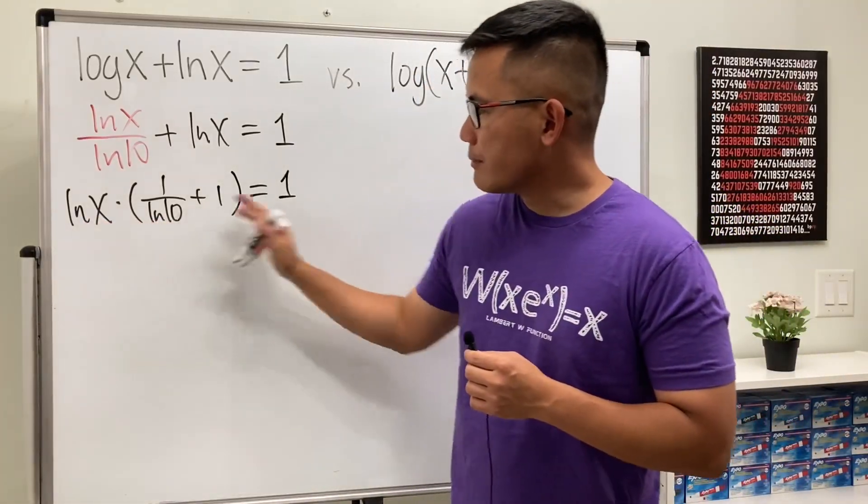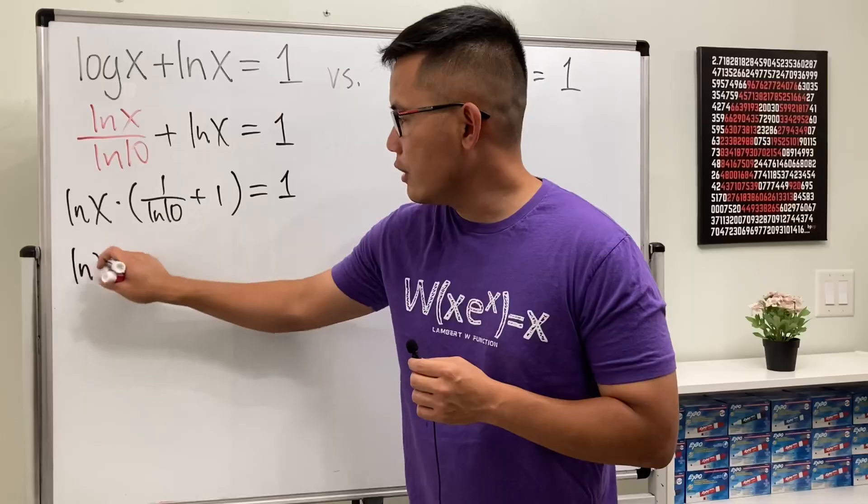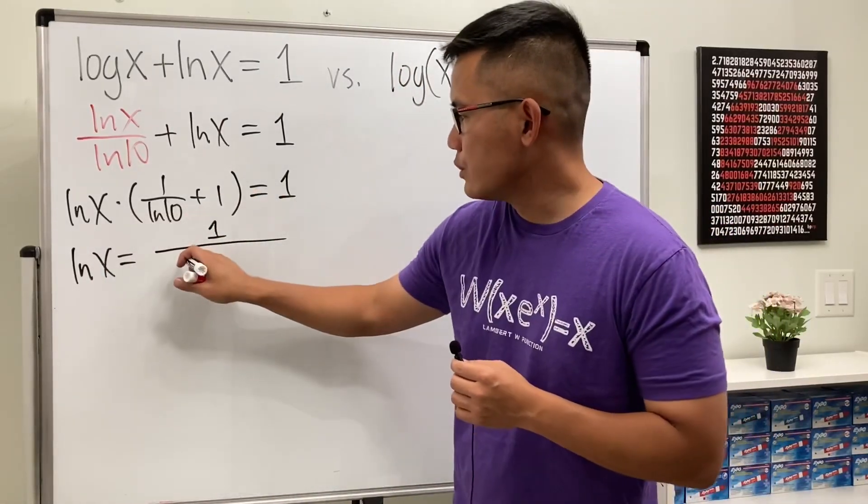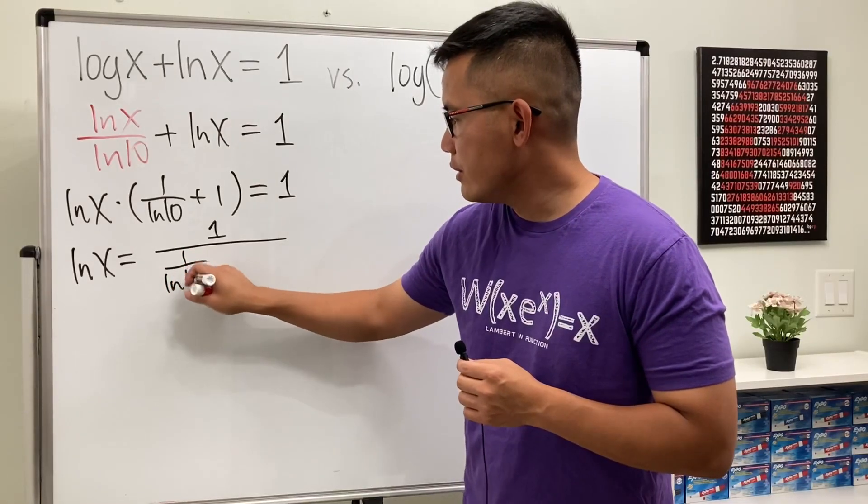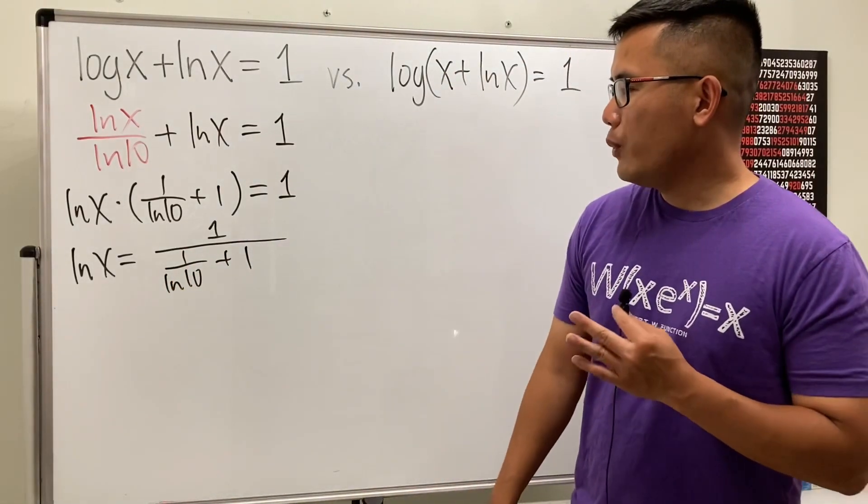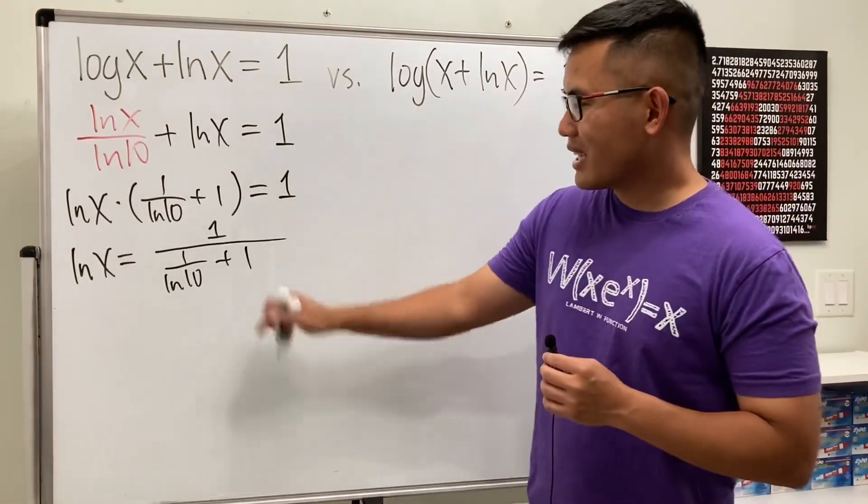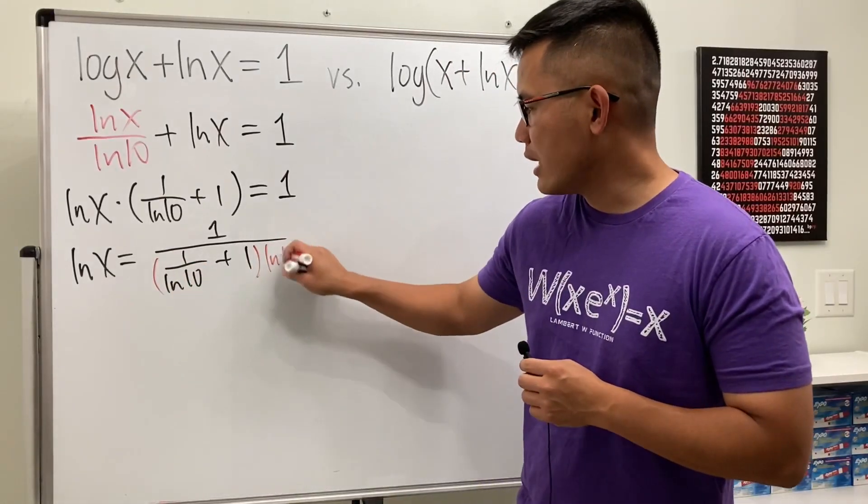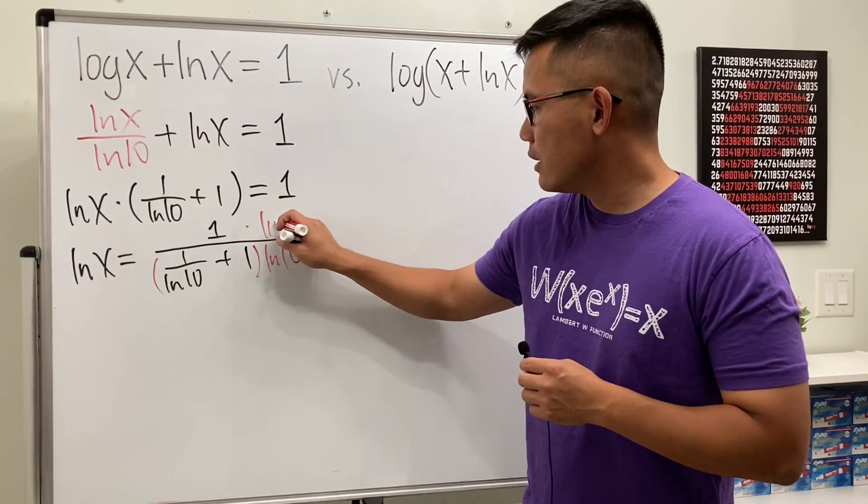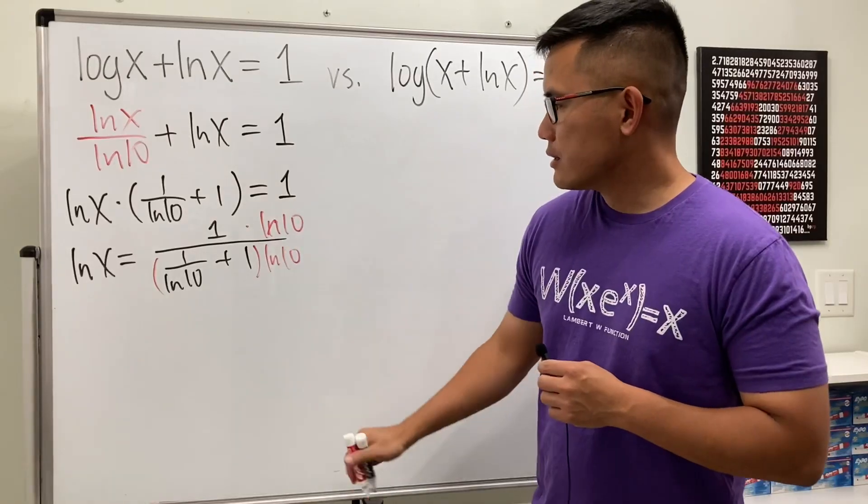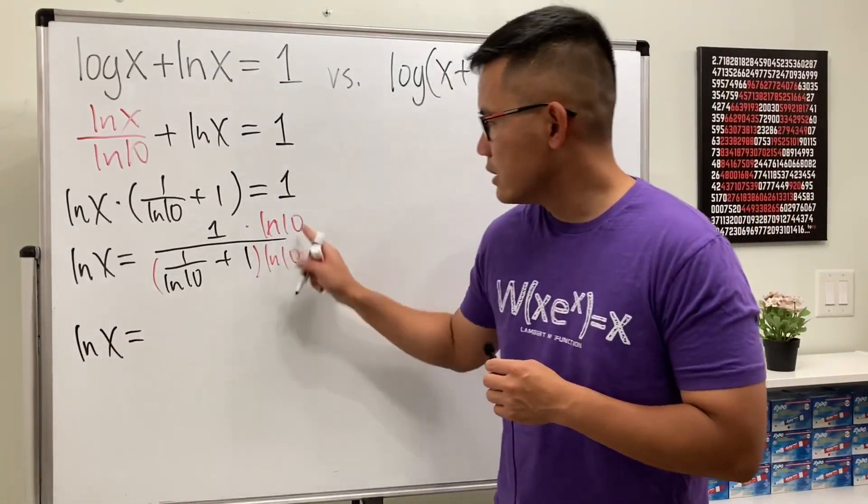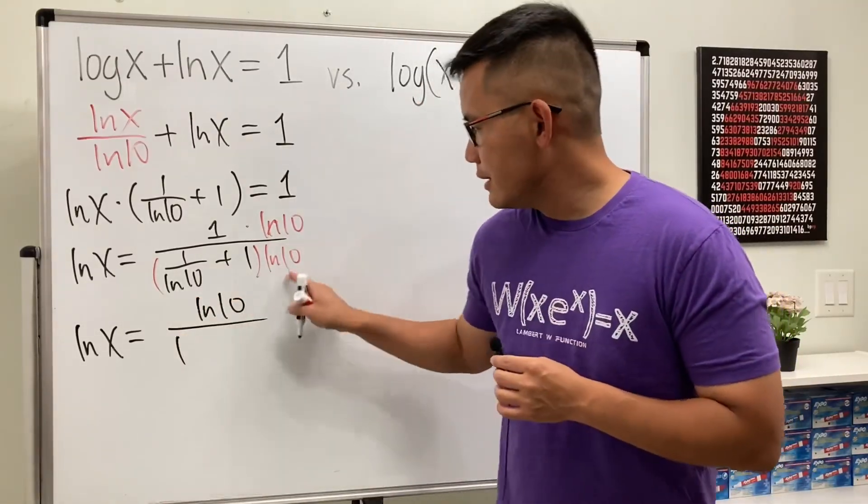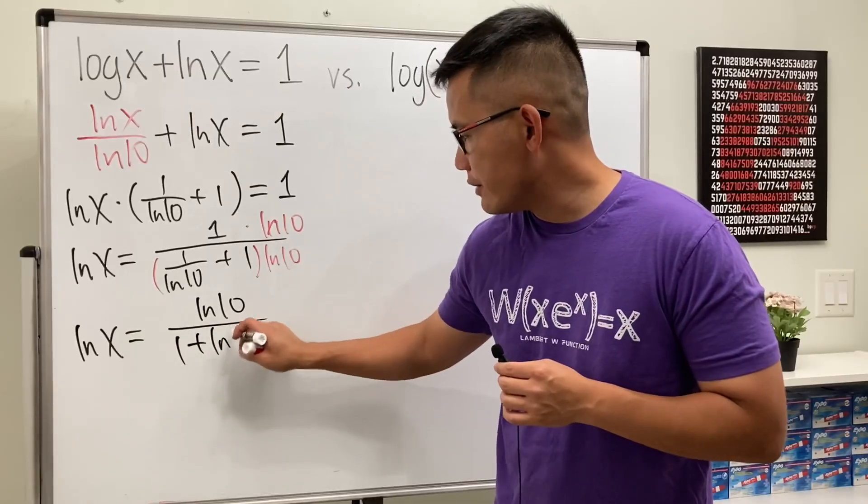Now we can just divide this on both sides. So we are looking at ln of x, that's equal to this 1 on the top, over this on the bottom, which is 1 over ln 10 plus 1. And before we continue, let's just clean the complex fraction up a little bit. Let's multiply the top and bottom by ln 10. So we are looking at ln of x equals, this is ln 10 on the top, over this and that is just 1. This and that is ln 10, so we have this expression, slightly better in my opinion.